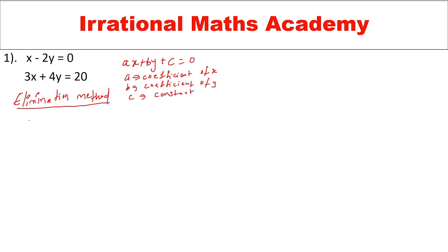Let me write down the equations: x minus 2y equal to 0, and 3x plus 4y equal to 20. Either I can eliminate the x variable or I can eliminate the y variable. Let me eliminate the x variable in the first case.